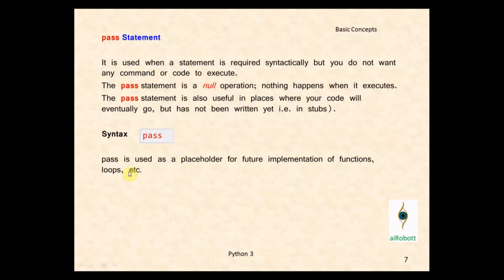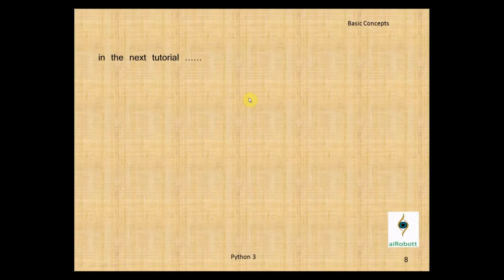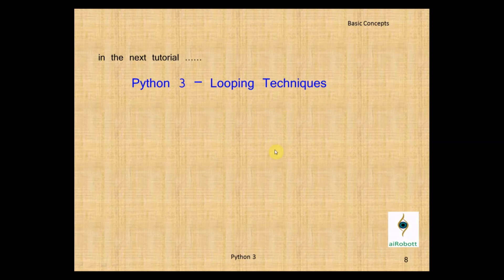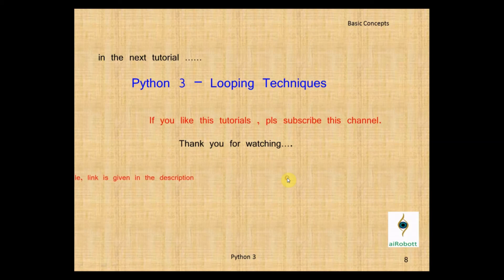So, pass is used as a placeholder for future implementation of functions, loops, etc. In the next tutorial, we are going to learn about the looping techniques in Python 3. If you like these tutorials, please subscribe to my channel and share with your friends. Thank you for watching, friends. Please see this tutorial lesson available in PDF file — I have given the link in the description. Please see and download it for further reading. Signing off, Kishore Kumar Vajja.